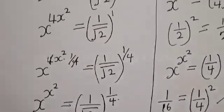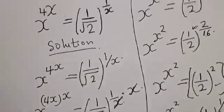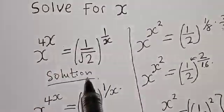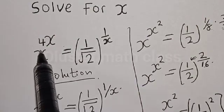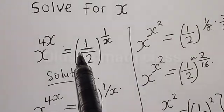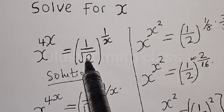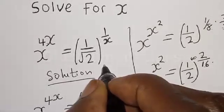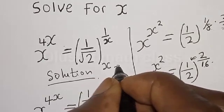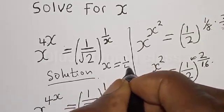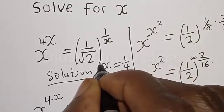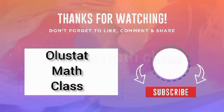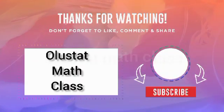Our final answer is x is equal to 1 over 4. From the given question we had to solve for x in x raised to power 4x is equal to 1 divided by root of 2, raised to power 1 divided by x. Therefore our final answer is x is equal to 1 divided by 4. If you have enjoyed the class please don't forget to like, share, comment and subscribe. Thank you.